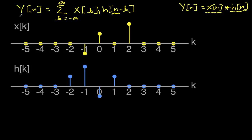For example, we'll start off getting y of negative 4, y of negative 3, and so on. We'll basically keep picking different values of n, and for each of those values of n, we'll compute a corresponding y value from the entirety of the x function and the entirety of the h function. That's why k has replaced n in all of these graphs.